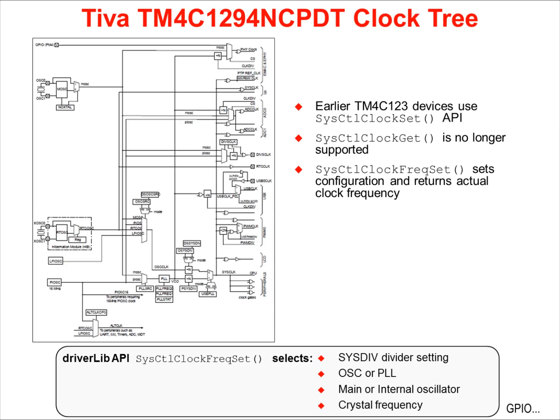On the previous slide, we looked at the possible sources for the system clock. If you find the system clock line on the right of this diagram and follow it back through the multiplexers, you'll find that any of the four fundamental clock sources can drive it. As an example, let's connect a 16 MHz crystal to the inputs of the main oscillator on the left.